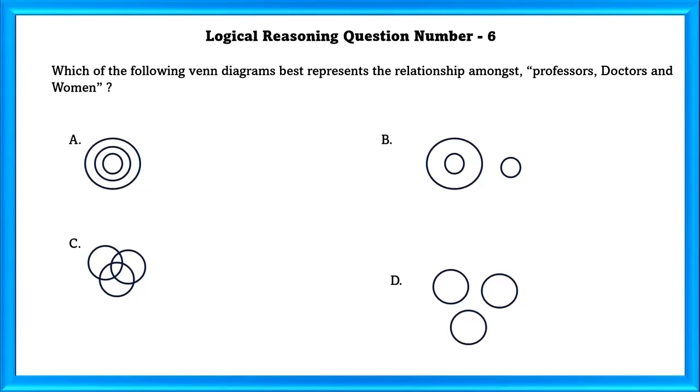Logical Reasoning Question Number 6. Which of the following Venn diagrams best represents the relationship amongst professors, doctors, and women? Women can be doctors and professors. Doctors can be women and professors. Professors can be doctors and women. So therefore, C.